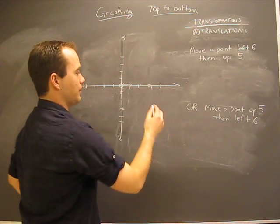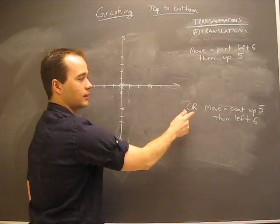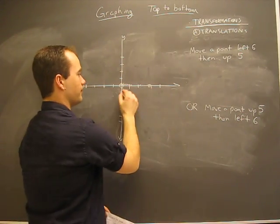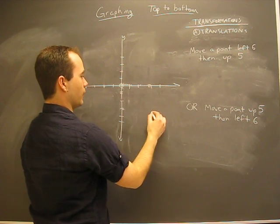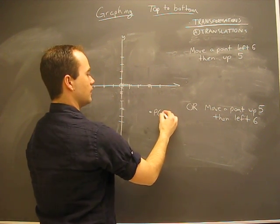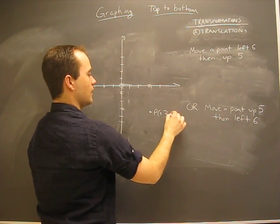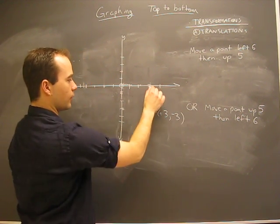Anyway, let's pick a point up here because we're going to try something two different ways. If we move up, we're going to try it and do it two different ways to see what we arrive. Here's a regular old point. If this is positive 3 in the x and negative 3 in the y.